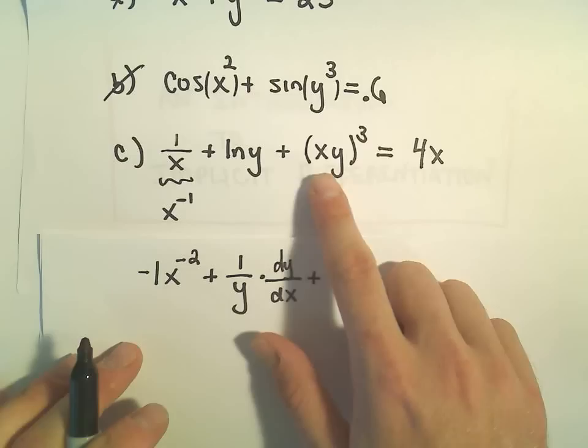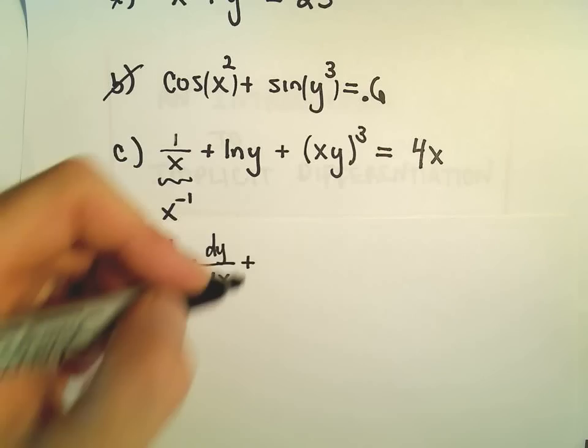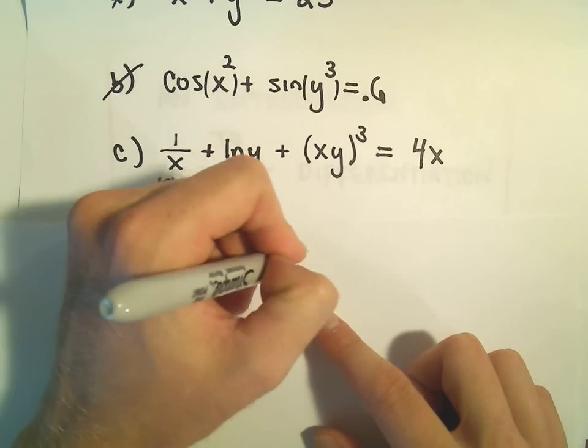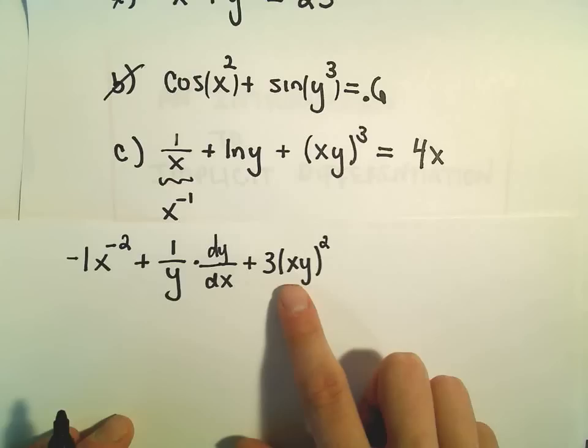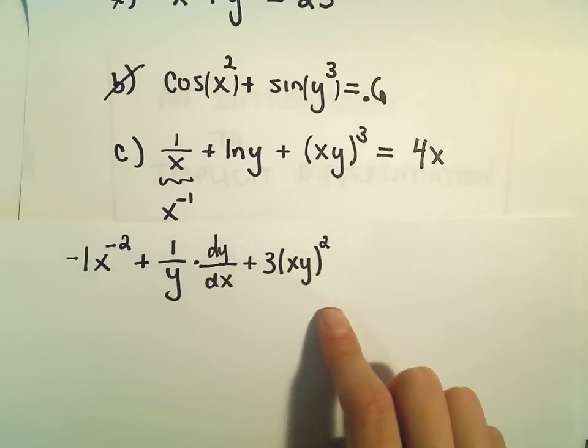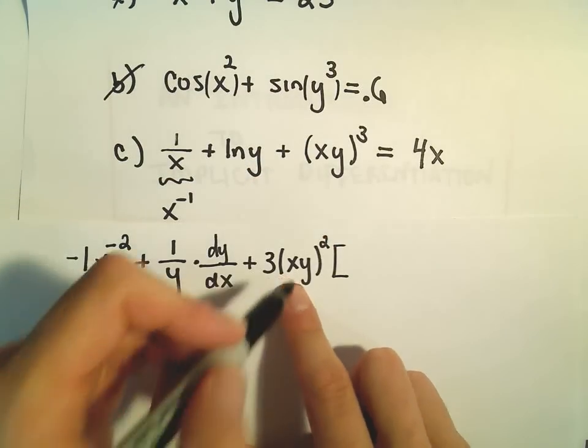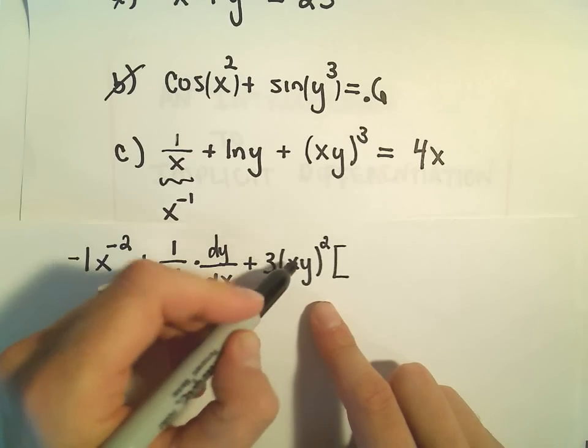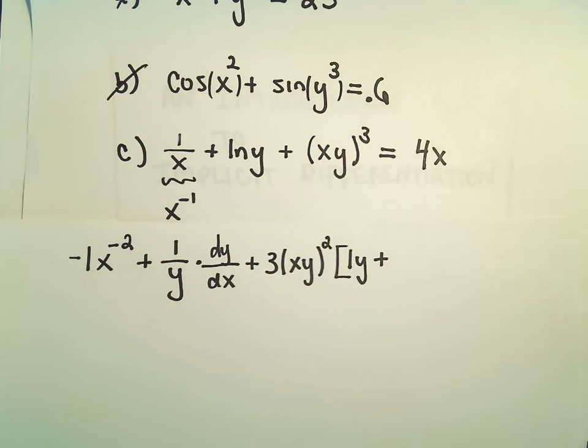When we do the derivative of xy to the third, we'll have to be a little careful. We'll have to use both the chain rule and the product rule, so the three comes out front and we'll leave the inside alone. So we'll get three times the quantity xy squared, but then we have to use the product rule. If we take the derivative of x we just get 1, we'll leave the y alone, and then when we take the derivative...